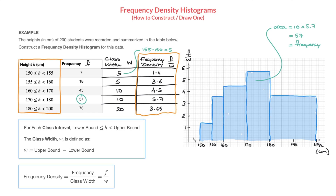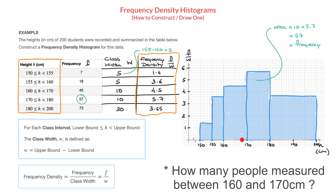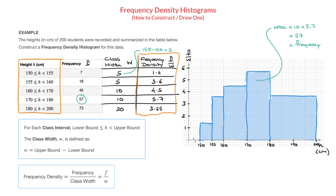As a quick second example: if we were given only the histogram and asked how many people measured between 160 and 170 centimeters, we'd calculate the area of that rectangle. The class width is 10 and the height is 4.5, so the area is 10 times 4.5, which equals 45. So we can say there are 45 people measuring between 160 and 170 centimeters. That's it for this tutorial on how to construct a frequency density histogram.